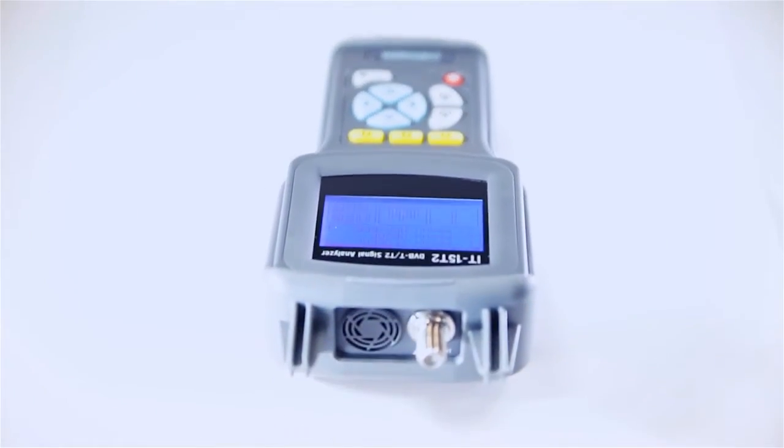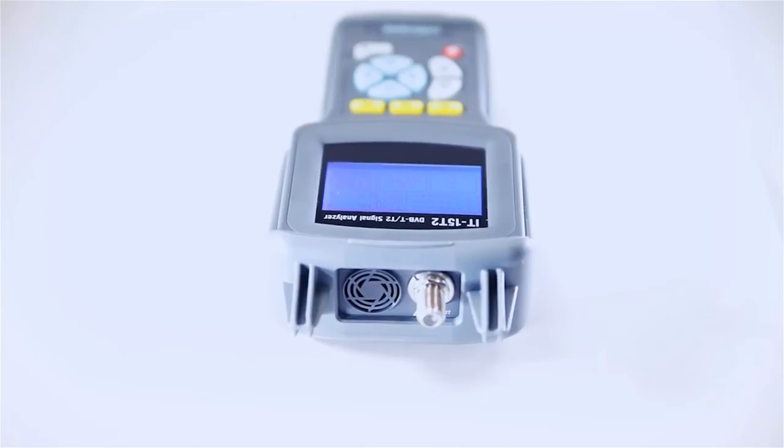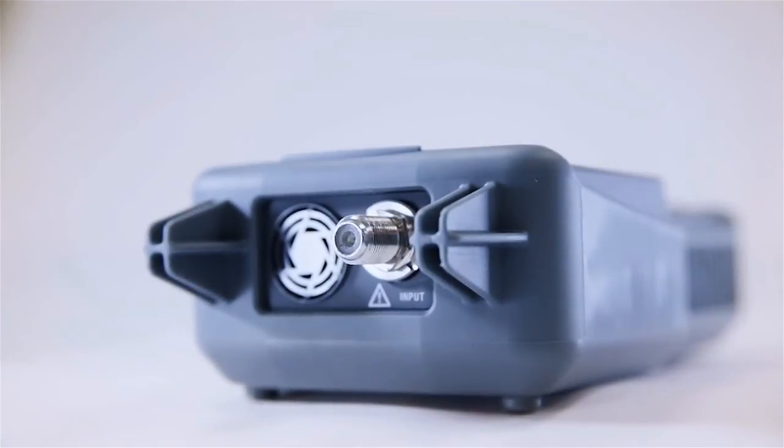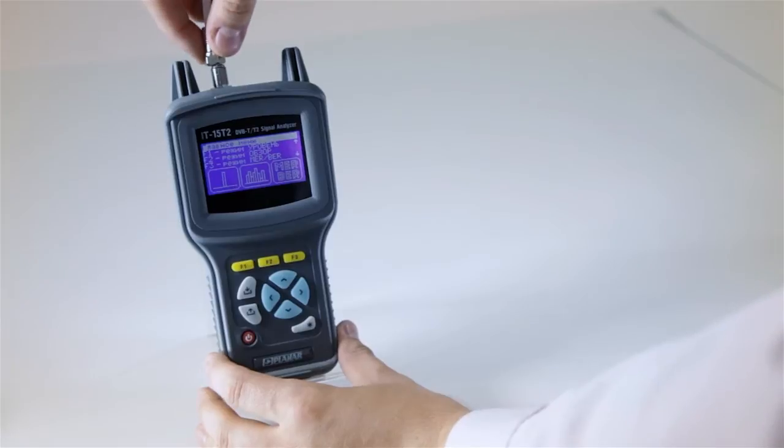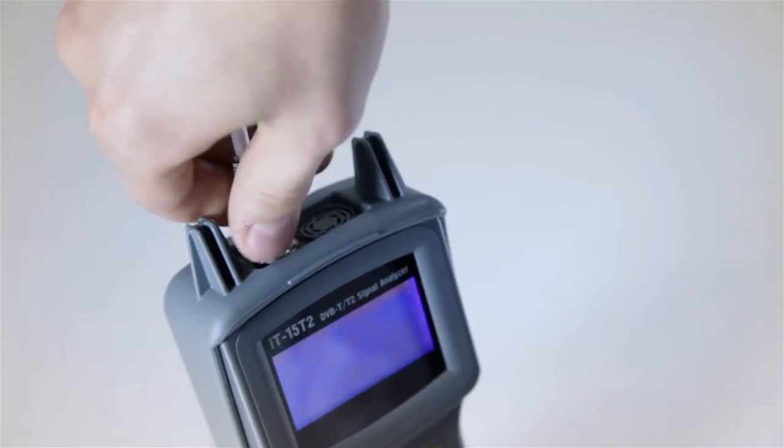A replaceable F connector input is located at the top of the instrument. A DC voltage output can optionally be supplied via this connector to power an active antenna.